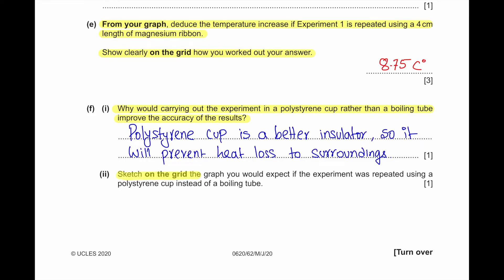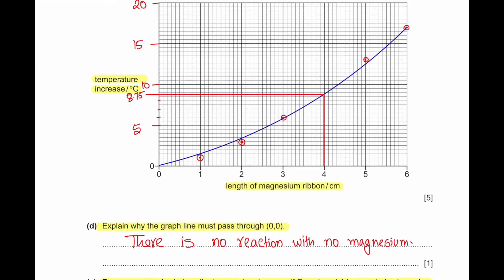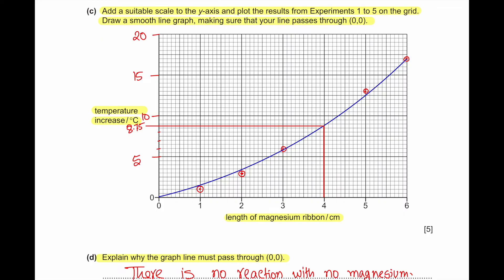Part F2: Sketch on the grid the graph you would expect if the experiment was repeated using a polystyrene cup instead of a boiling tube. If we use a polystyrene cup, the temperature change would be a little bit higher. We draw a graph that starts from the origin but finishes at a slightly higher temperature.